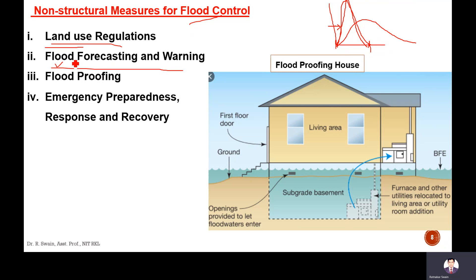Next is flood proofing. Flood proofing means flood-proof houses are constructed. In these houses there will be a greater basement with space so that it can store some flood water, and the first floor of the house would be a little above ground level, so that the flood water cannot reach the walls of the house. This type of house is constructed in flood-prone areas.